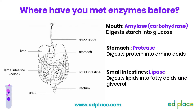In the small intestine, we break down lipids — lipids are the more scientific name for fats. The enzyme that breaks down lipids is called lipase. Lipase digests lipids into two molecules called fatty acids and glycerol. Lipids are large insoluble molecules broken down into small soluble molecules of fatty acids and glycerol to allow them to be digested and enter the bloodstream. The optimum pH for lipase is about pH 8.